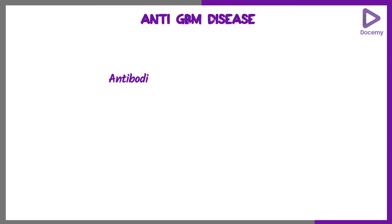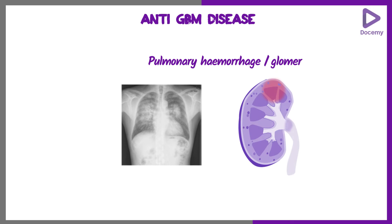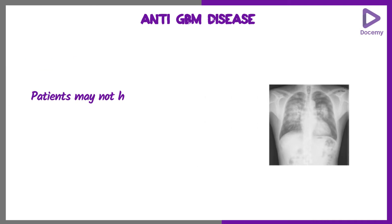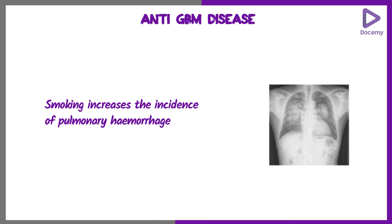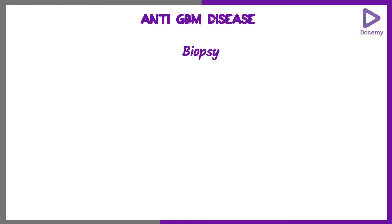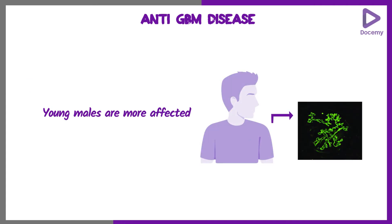Regarding anti-GBM disease, these are antibodies against the glomerular basement membrane — specifically Collagen-4-Alpha-3 chain antibodies — and these are circulating antibodies. You can do a blood test to assess the levels of anti-GBM antibodies. The patient can have pulmonary hemorrhage or glomerulonephritis. Smoking increases the incidence of pulmonary hemorrhage. Biopsy shows crescentic glomerulonephritis with linear IgG immunofluorescence. Young males are more commonly affected.